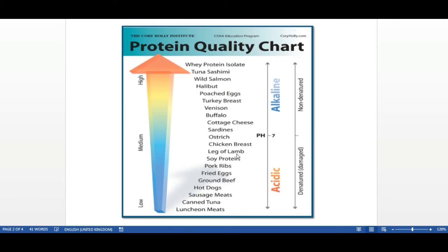And it makes sense, if you look at things like tuna sashimi, that's effectively raw tuna. It's the highest quality protein because it's completely undenatured. And if you look at the other end of the scale, you've got your canned tuna.